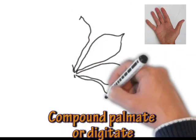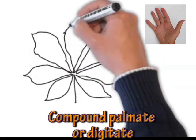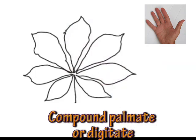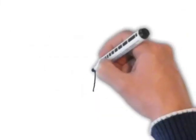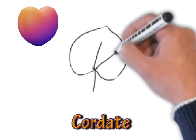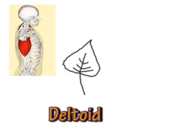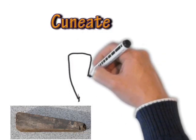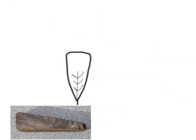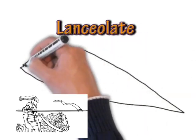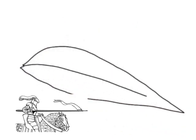We start off with a compound palmate or digitate leaf, just like the palm of your hand. A cordate leaf is heart-shaped at the base. The deltoid leaf is triangular — just like your deltoid muscles on the side of your shoulder. Then we have cuneate, which is a wedge shape. Then we have lanceolate — think of a lance that a knight might have held: long and tapering and thin.